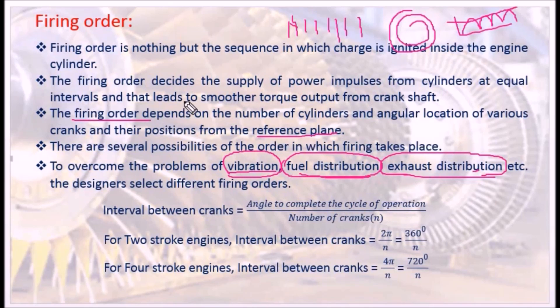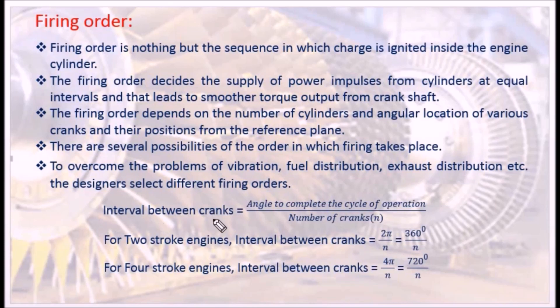The ultimate purpose of selecting the firing order sequence is smooth power impulse delivery and reduced vibrations. The interval between cranks — such as 180 degrees, 90 degrees, or 120 degrees — determines the calculation. The interval is the angle required to complete the cycle of operation for the IC engine.